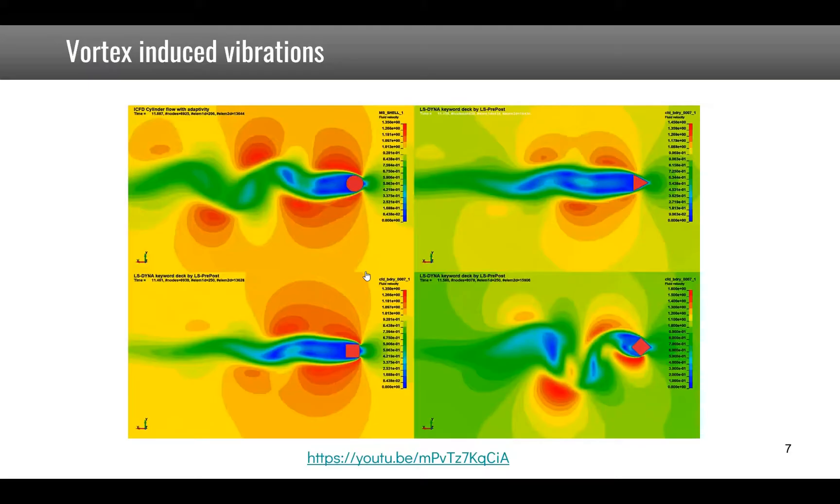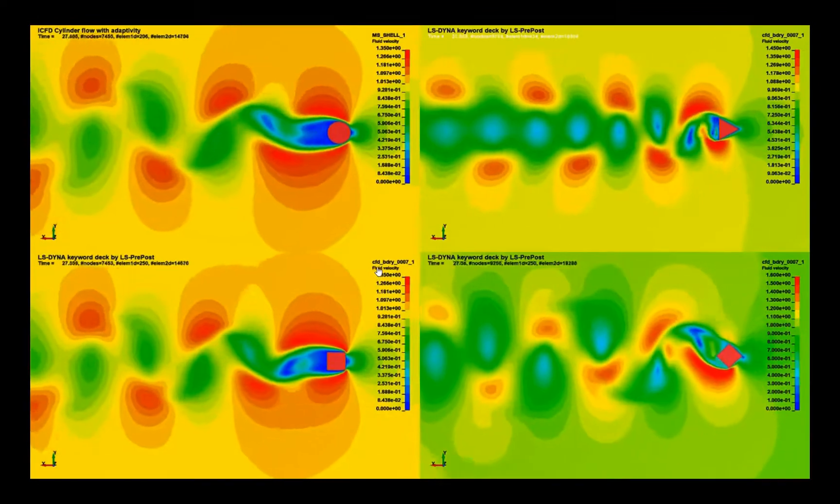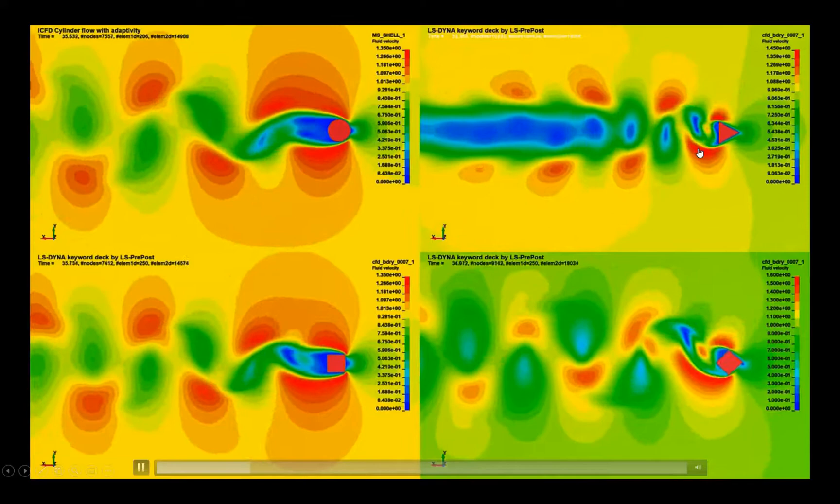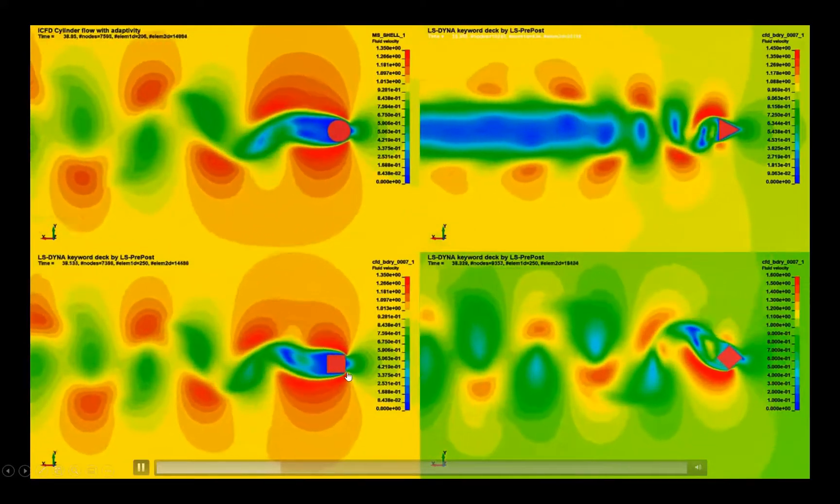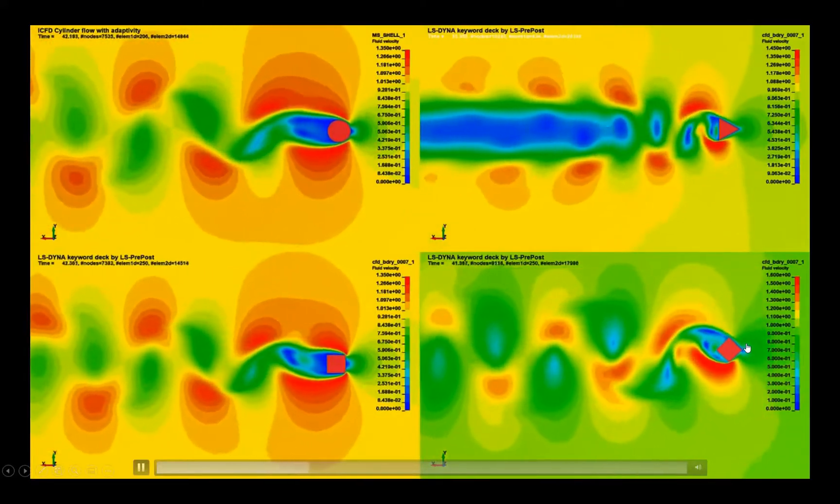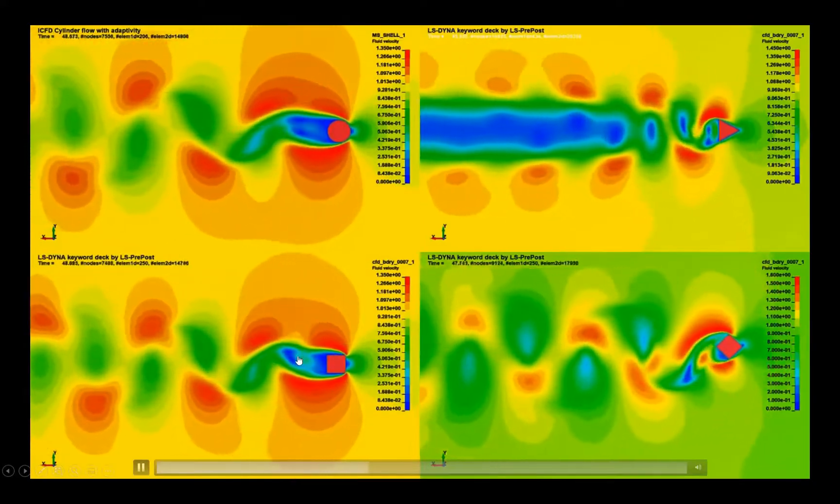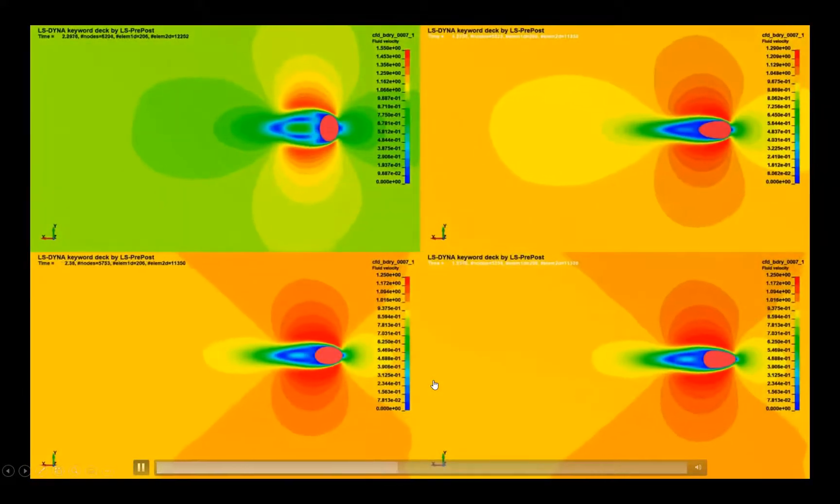Now this frequency and the formation of the vortices really depends on the shape of the object. You see here with the triangle or a square or even a square that you put at 45 degrees or a cylinder. These vortices are very different.